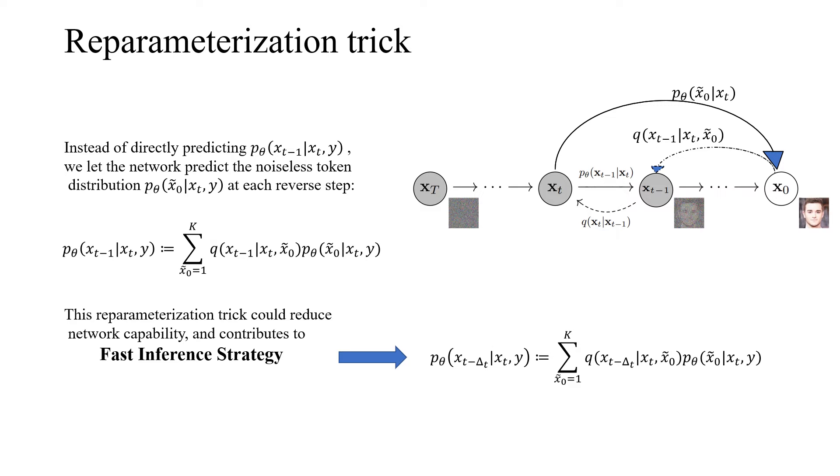Another important technique is the reparameterization trick. Instead of directly predicting X_{t-1}, we let the network predict the noiseless token distribution X_0 at each reverse step. This reparameterization trick could reduce the network capability and contributes to the faster inference strategy, which skips some steps in diffusion model to achieve faster inference.